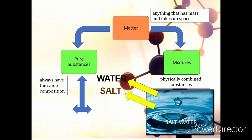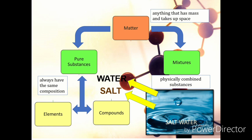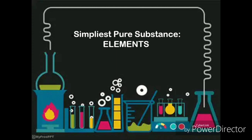Pure substances can be classified as an element or a compound. What are these two? Are you now ready to explore? Let's go! Let's begin with the simplest form of pure substances — the elements.